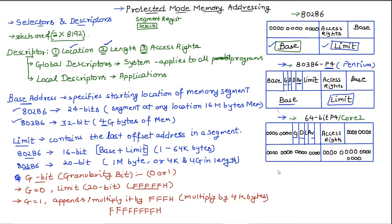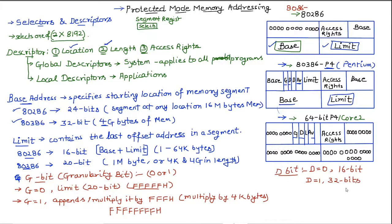The next bit is the D bit. The D bit specifies whether the instructions are 16-bit or 32-bit. If D equals 0, it specifies to the microprocessor that the instructions are 16-bit, compatible with processors from the 8086 family. If D equals 1, it specifies that the instructions are 32-bit. The microprocessor will then assume that all registers, instructions, and offset addresses are 32 bits, and it will automatically select the 32-bit registers.